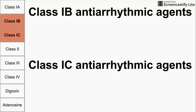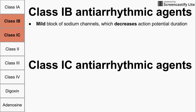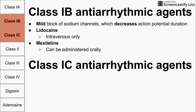Next, we'll talk about the 1B and 1C antiarrhythmic agents. Class 1B agents provide a mild block of sodium channels, which decreases the action potential duration. Two examples are lidocaine, which can only be administered intravenously, and mexiletine, which can be administered orally — allowing you to choose between them based on clinical need.